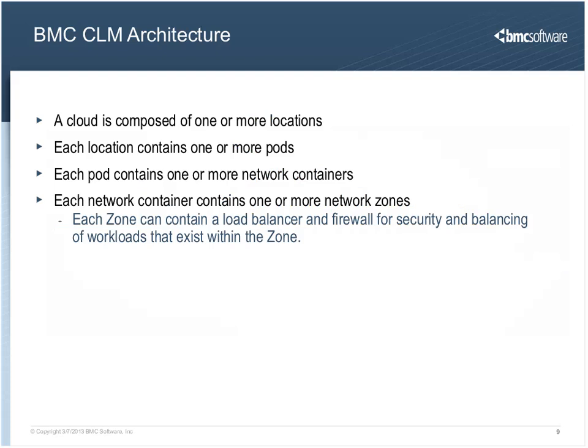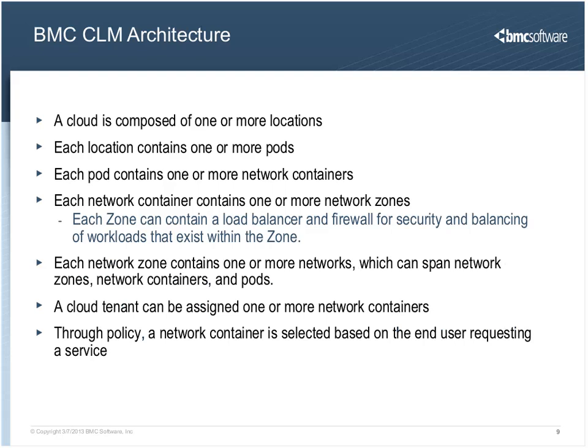A BMC CLM cloud is composed of one or more locations. Each location contains one or more pods. Each pod contains one or more network containers, and each network container contains one or more network zones. Each zone can contain a load balancer and a firewall for security and load balancing. Networks can span network zones, network containers, and pods as necessary. A cloud tenant — a user from a particular organization logging into the CLM portal — can be assigned one or more network containers. Through policies, a network container is selected based on the end user requesting a service.